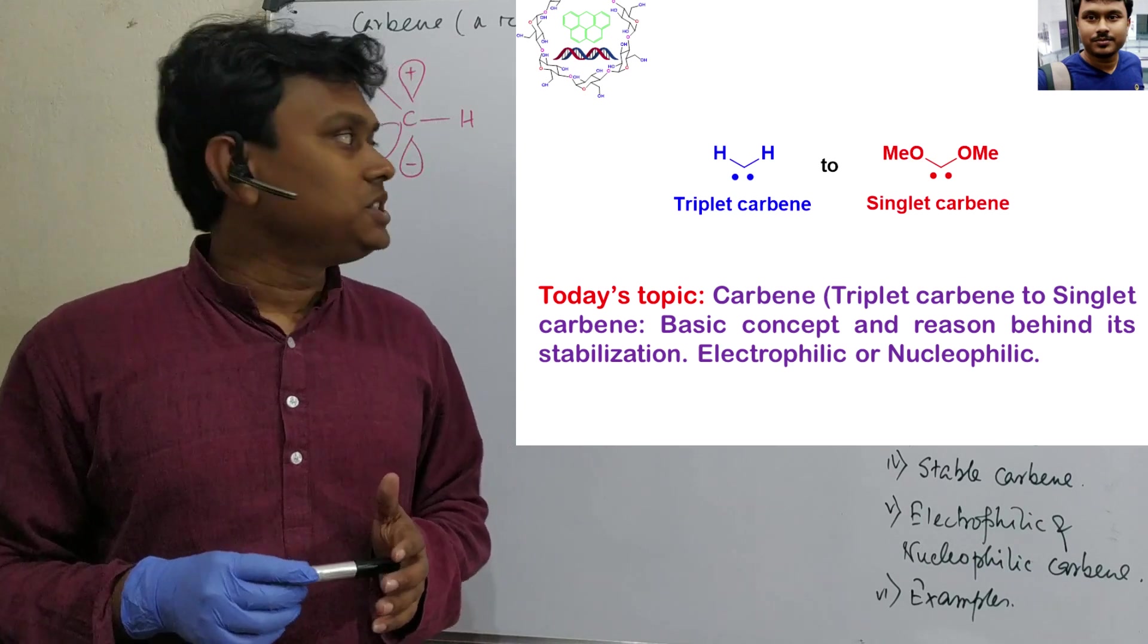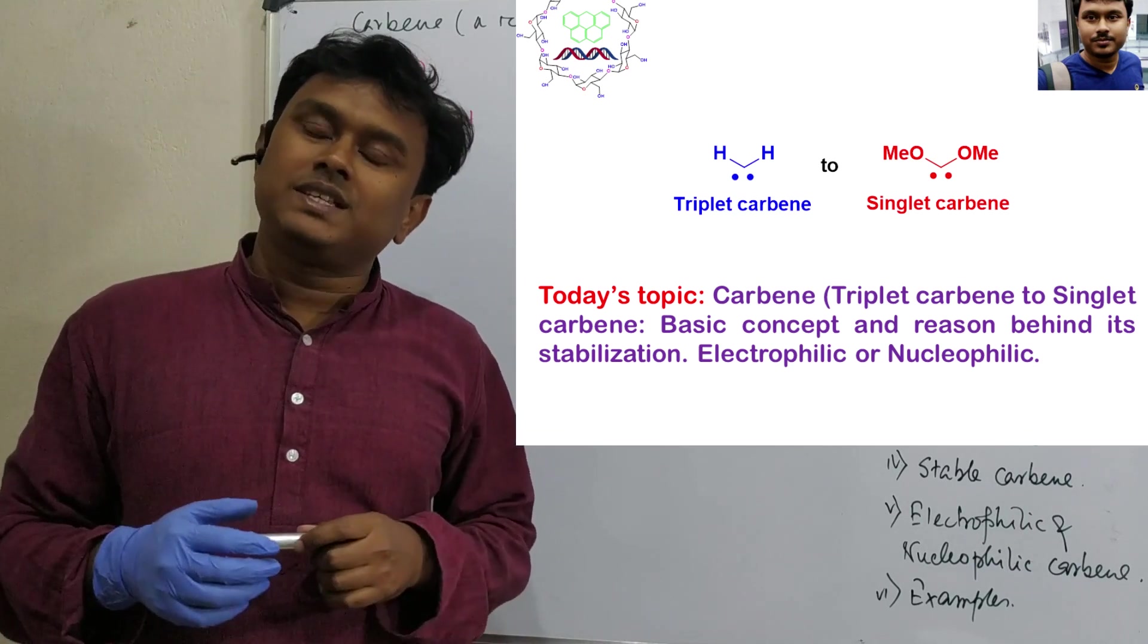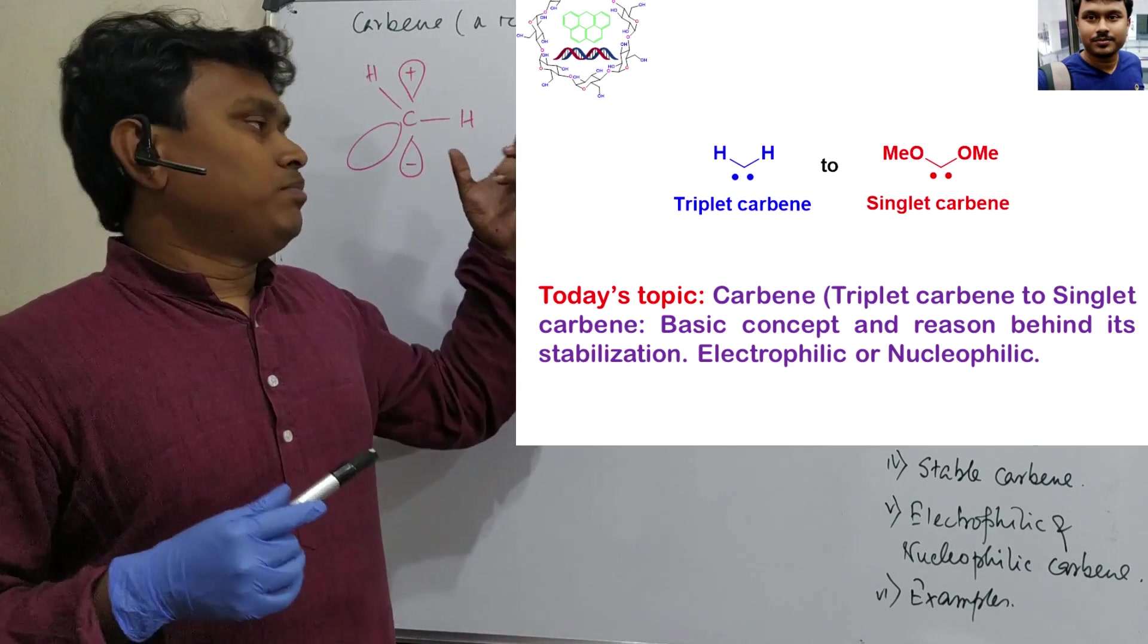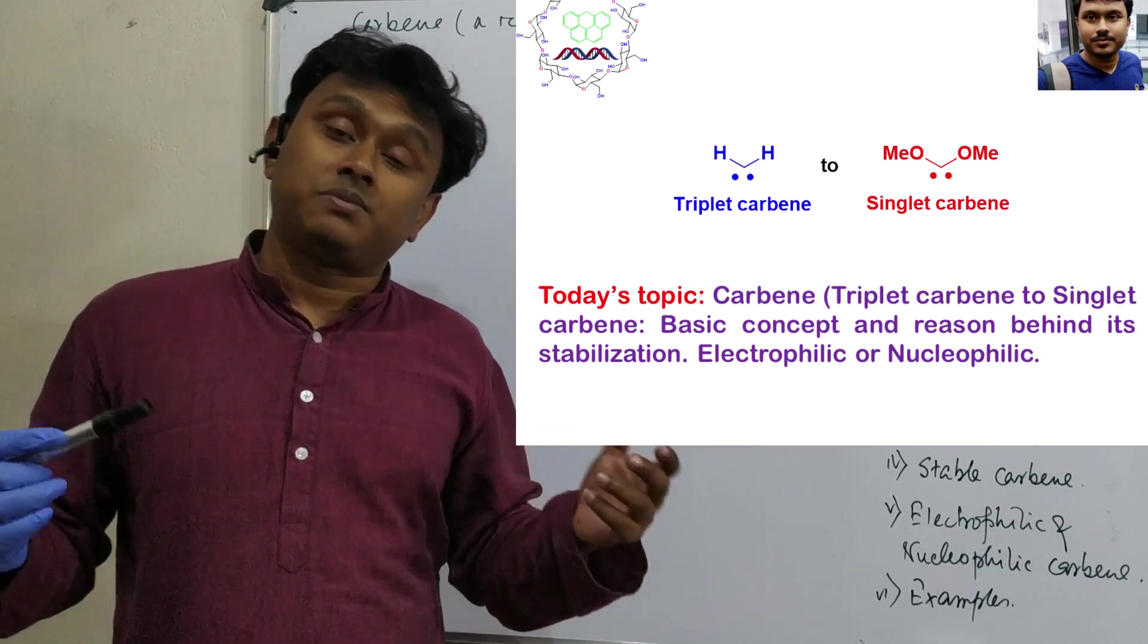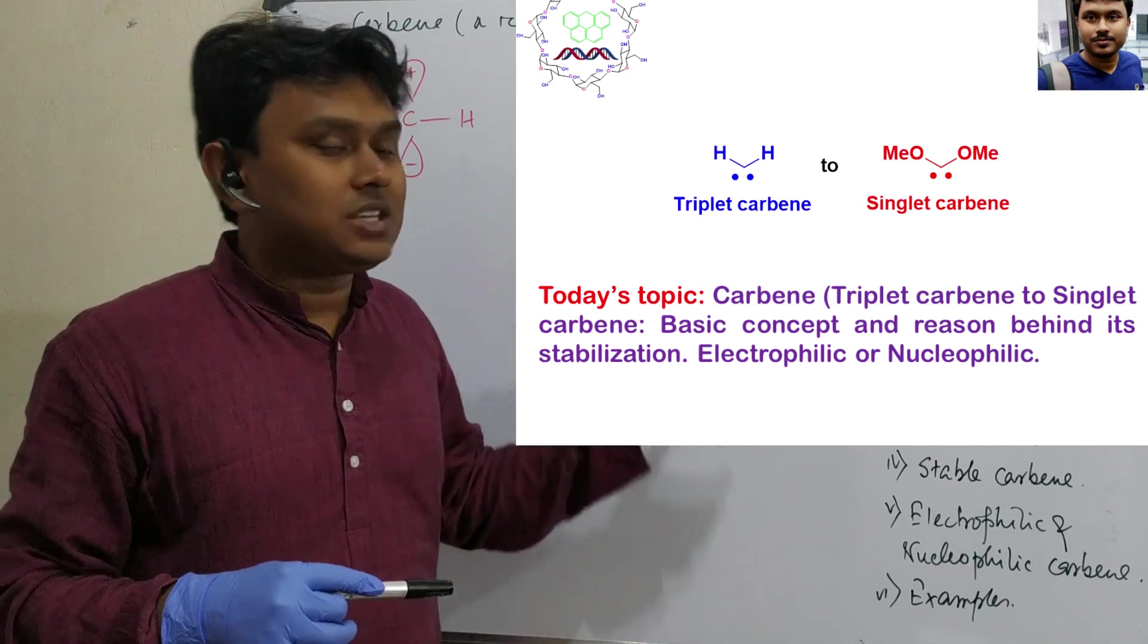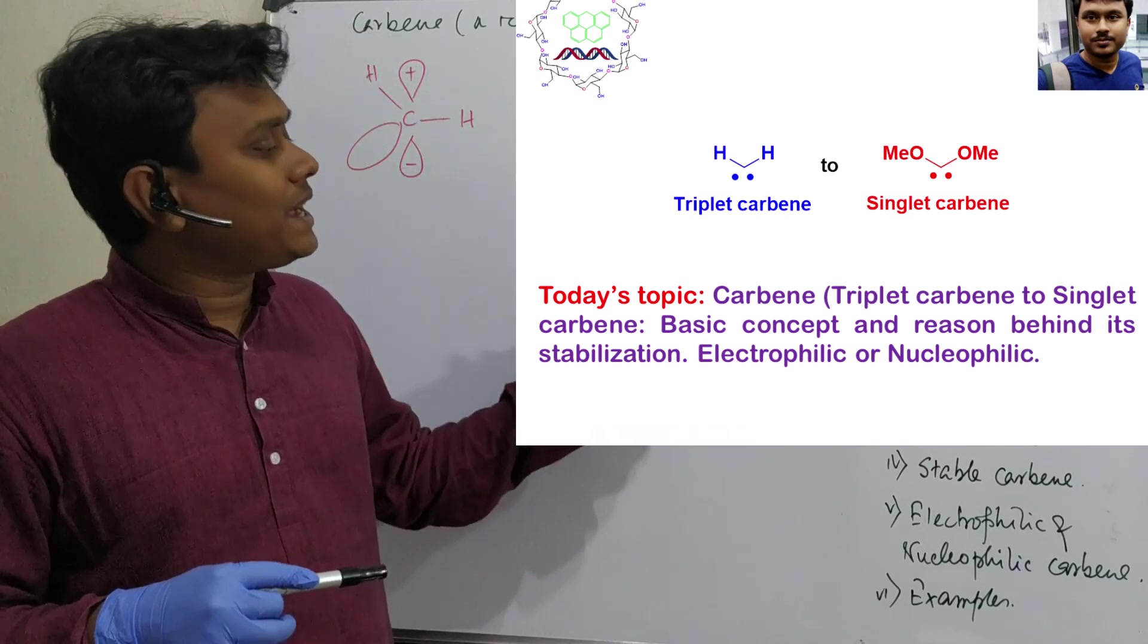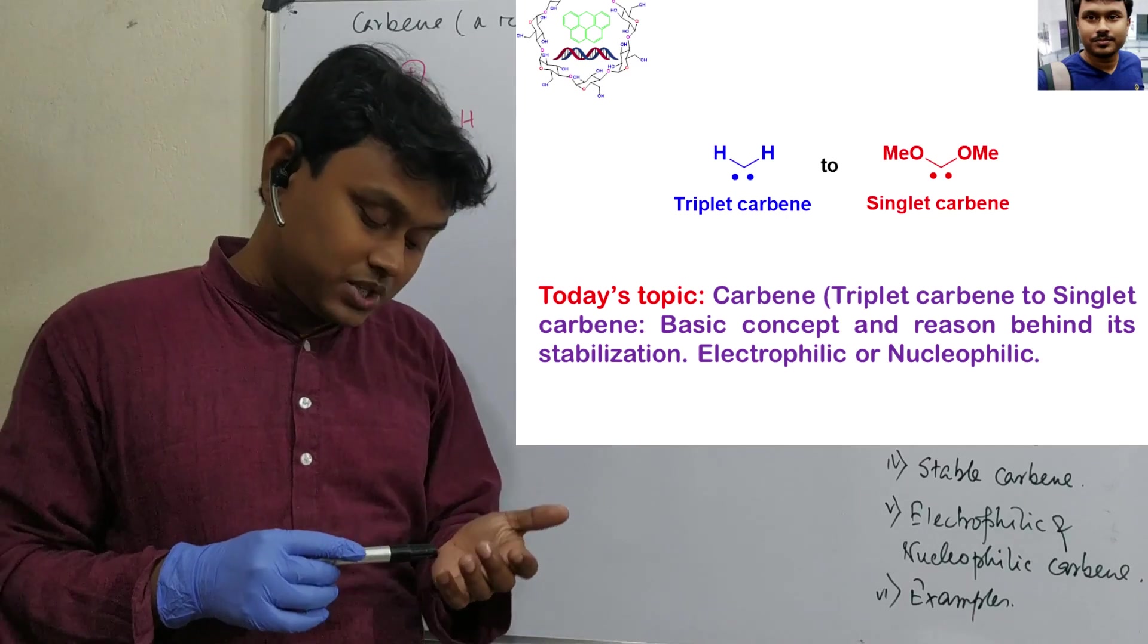So today we will discuss the reactive intermediate named carbene. They are actually 6 electron species but they could be considered as electrophilic or nucleophilic based on substitution and circumstances. So today we will discuss those things.